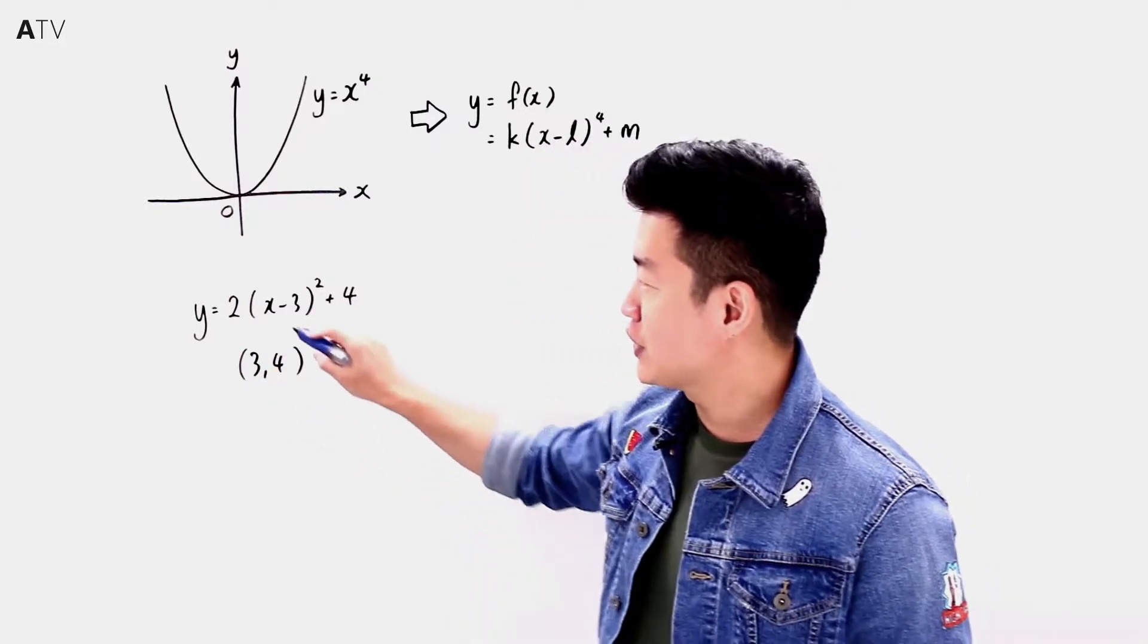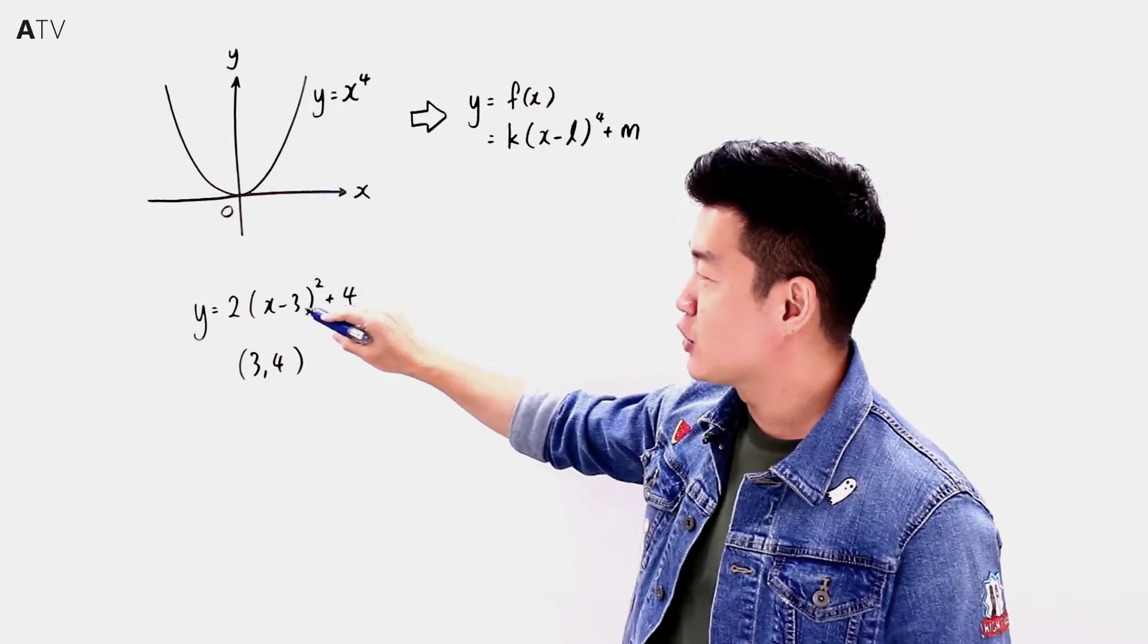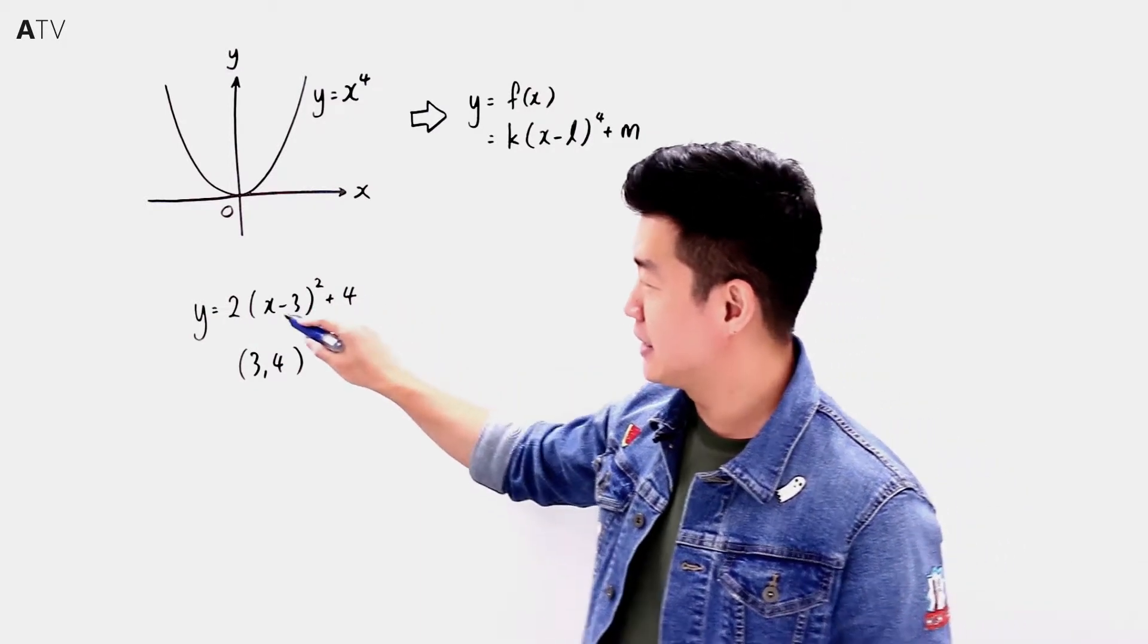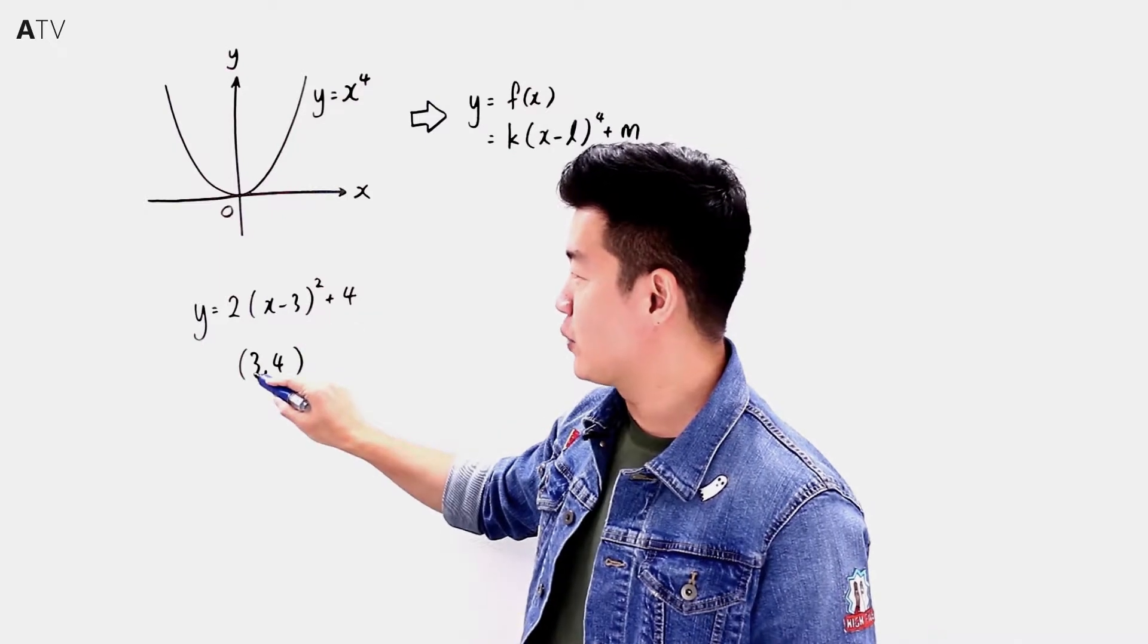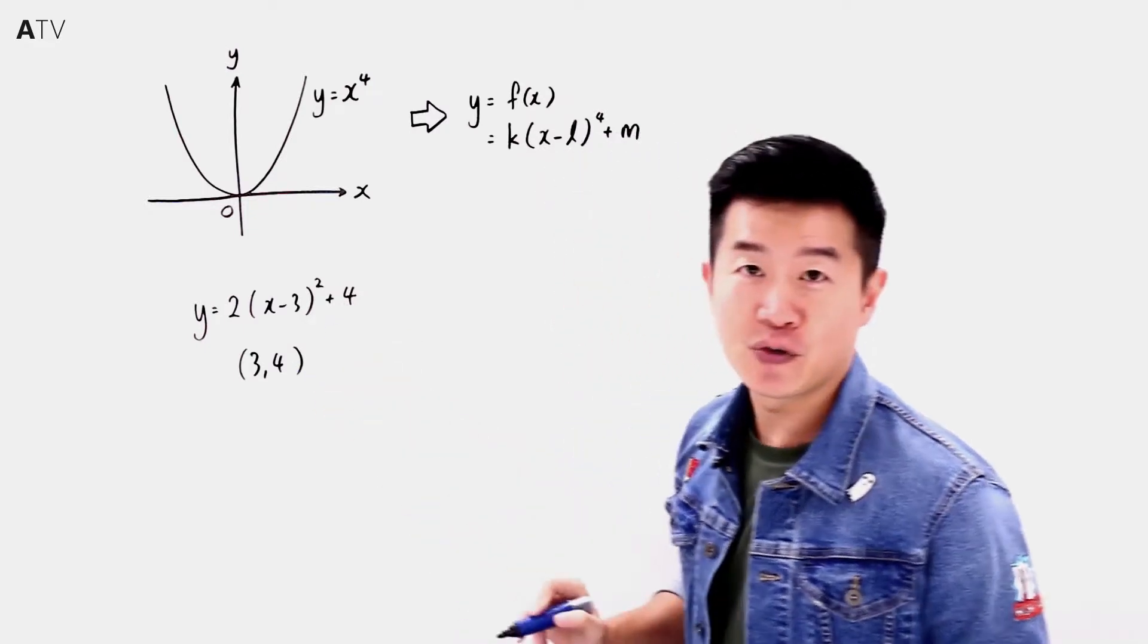How do I get this? From observation, (x - 3)² is always positive. So the smallest possible value for y is when x = 3, which gives a minimum value of 4.